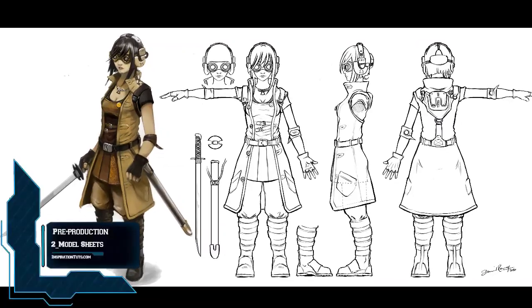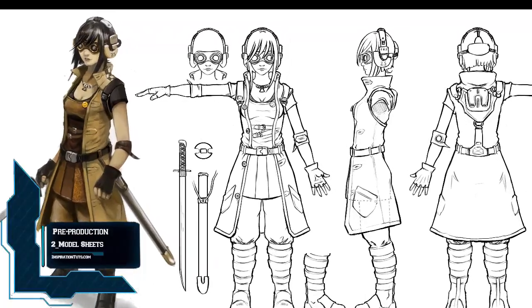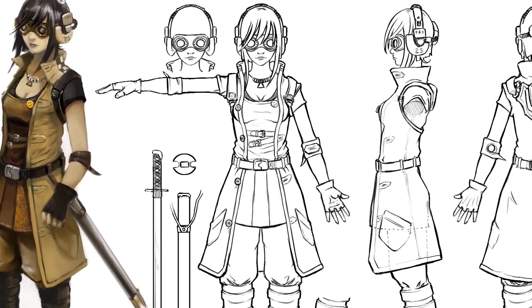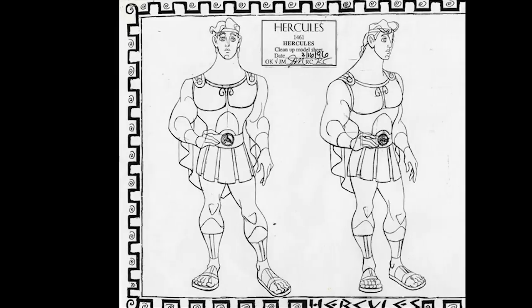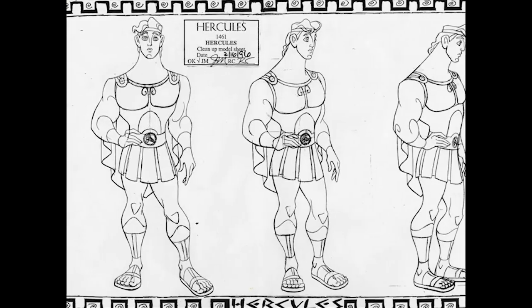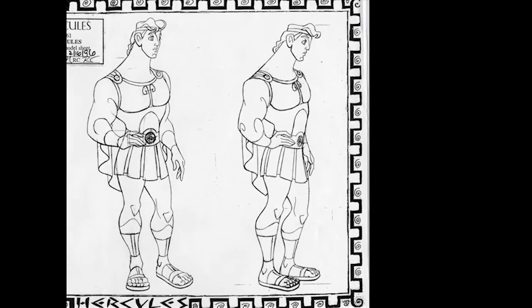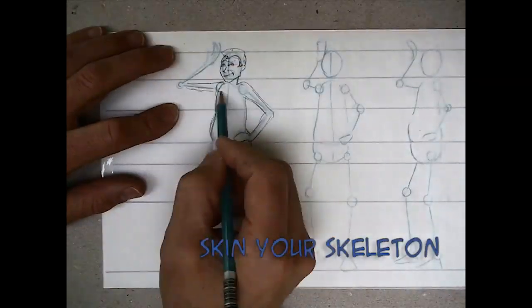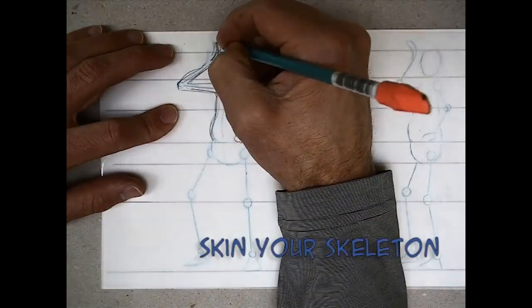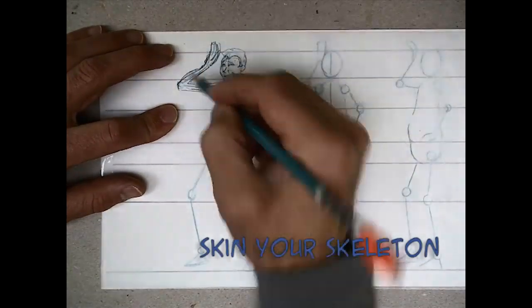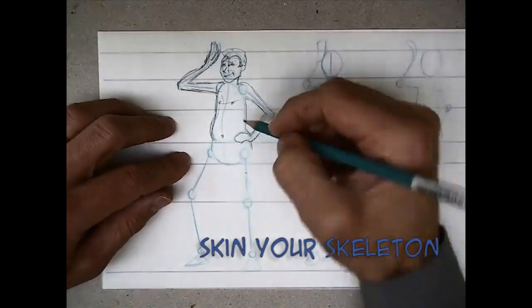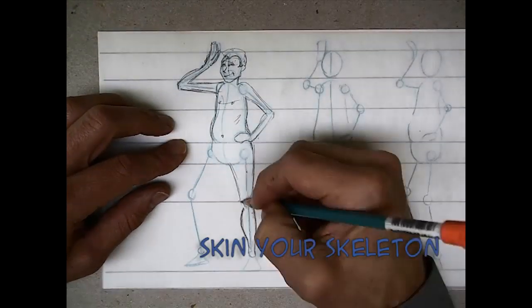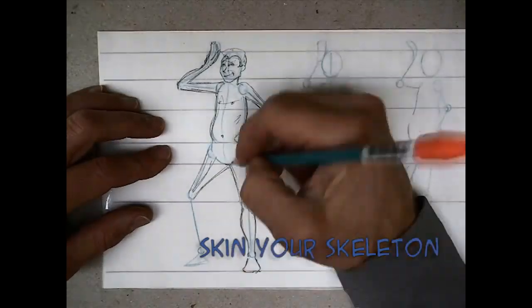Number 2, model sheets. After storyboarding you already have the characters for your movie and you have an idea of what they will be doing. Model sheets show every possible angle of a specific character. These drawings will display all the sides and expressions of a character that will appear in the movie. Having a detailed drawing here makes modeling of the character easier later.